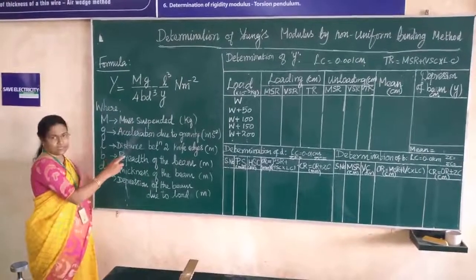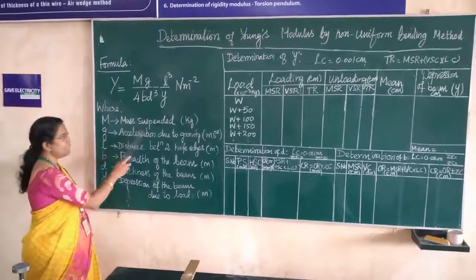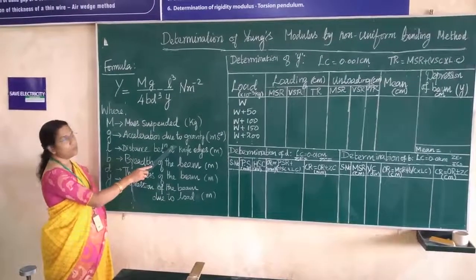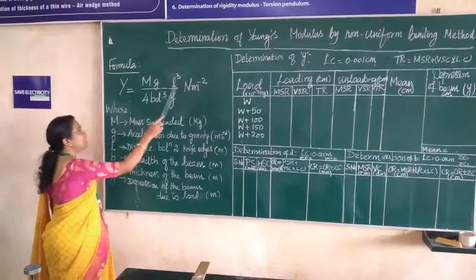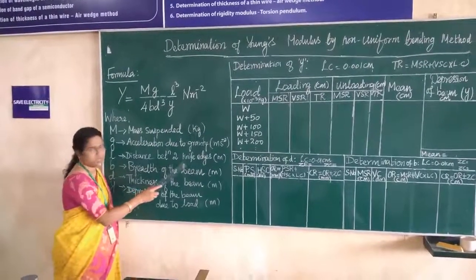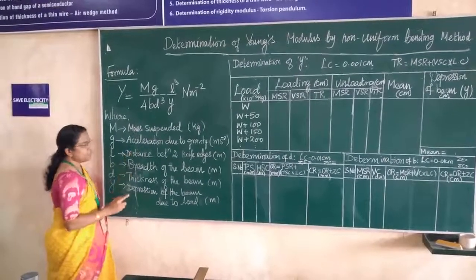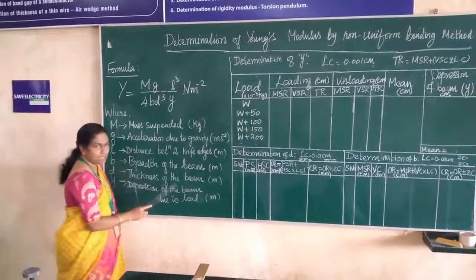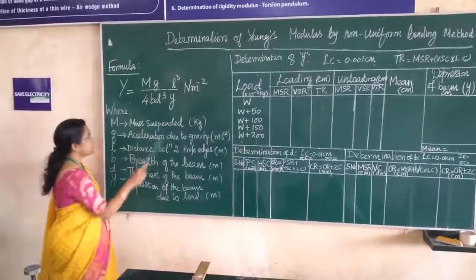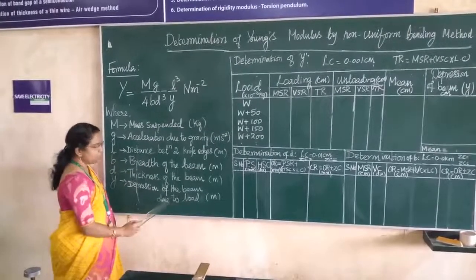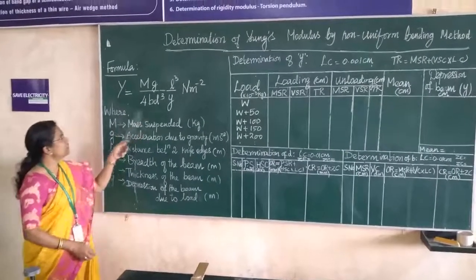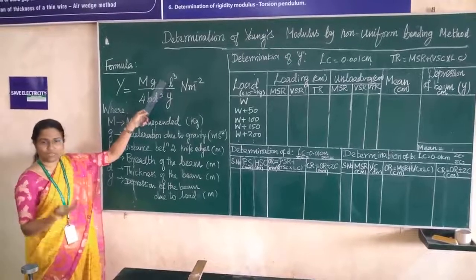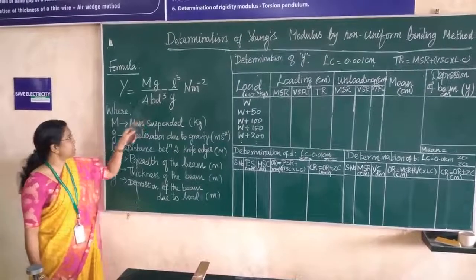The terms in the formula: M is the mass suspended — each time we add 50 grams. G is acceleration due to gravity, which has value 9.8 meters per second squared. L is the distance between the two knife edges. Capital M is 50 grams, G is 9.8, and L is the distance between two knife edges, which we can read from the meter scale.